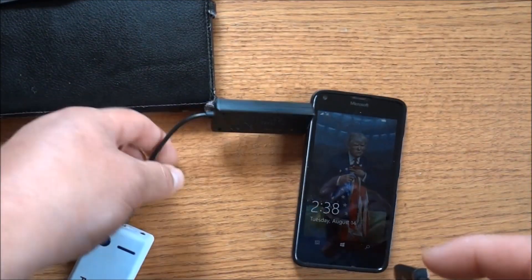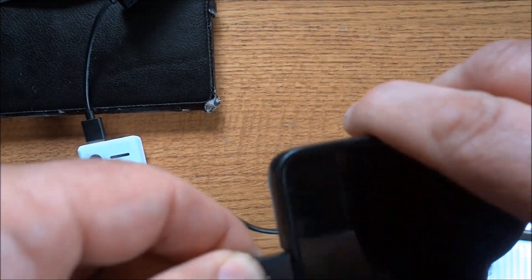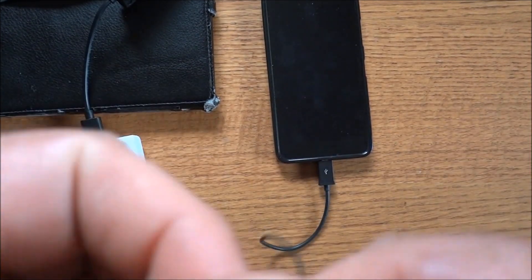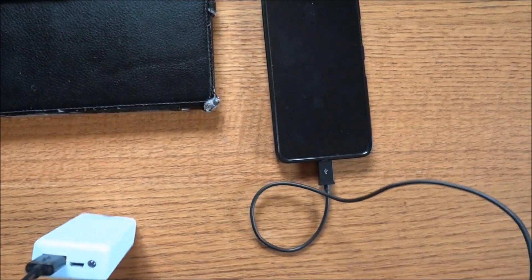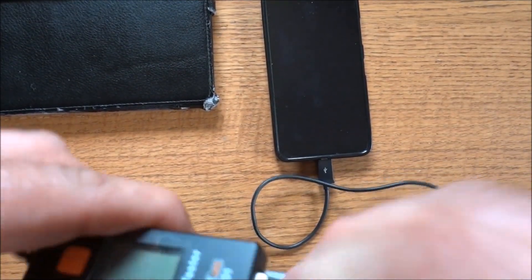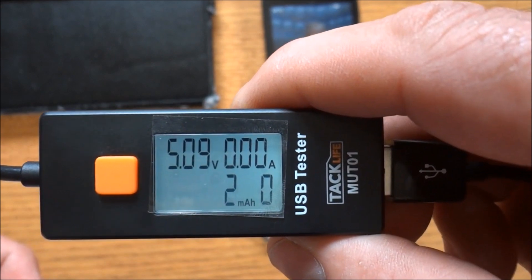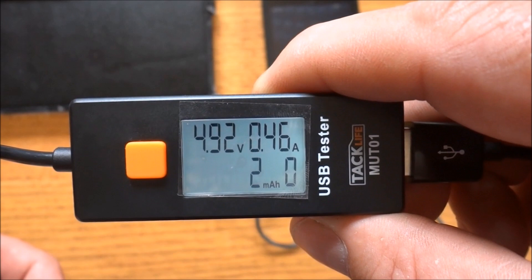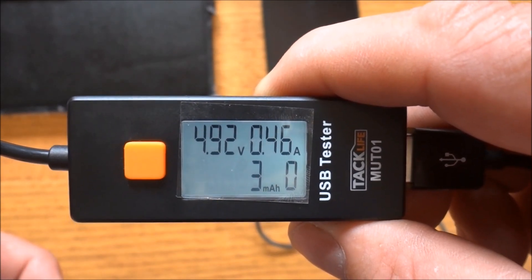Let's switch up cables one more time. This time I'm using a cable from MPOW. Turn my power bank on one more time and let's see how much power this one is drawing - 4.92 volts at 0.46 amps. A lot better than the other cables, right?